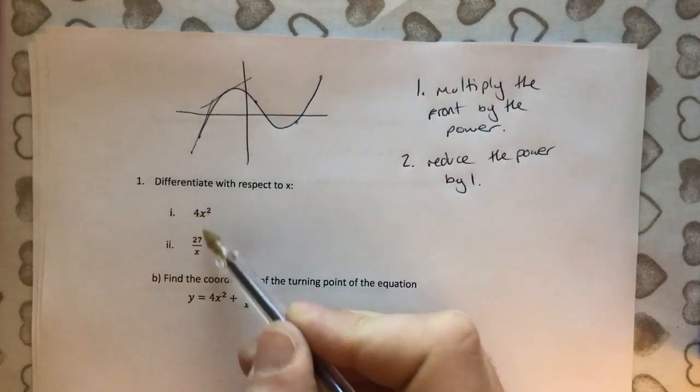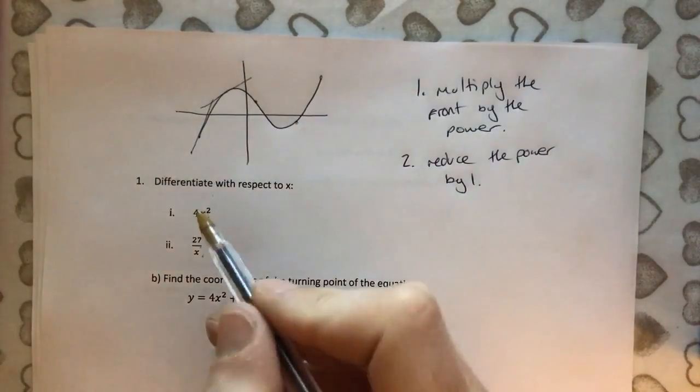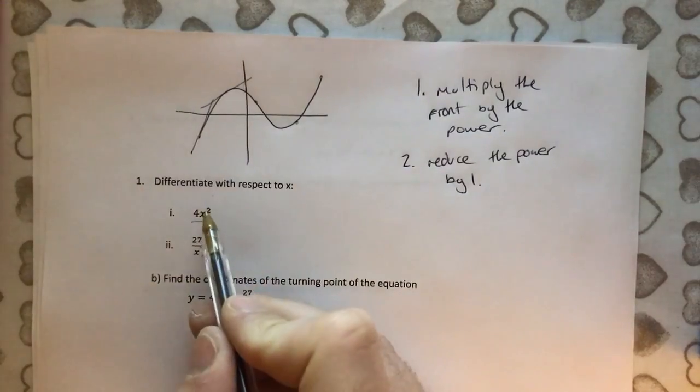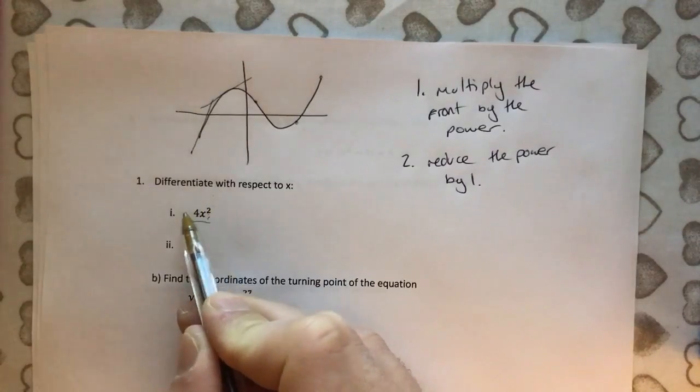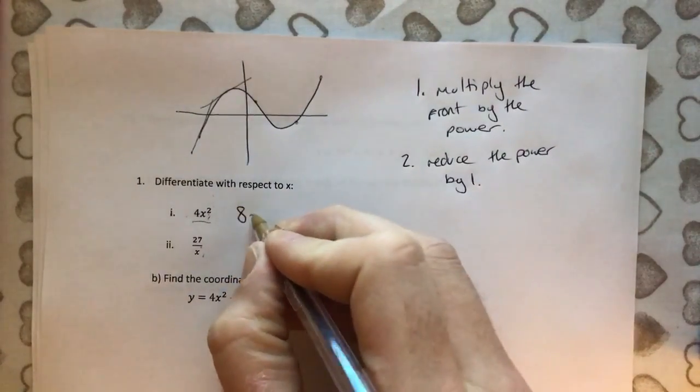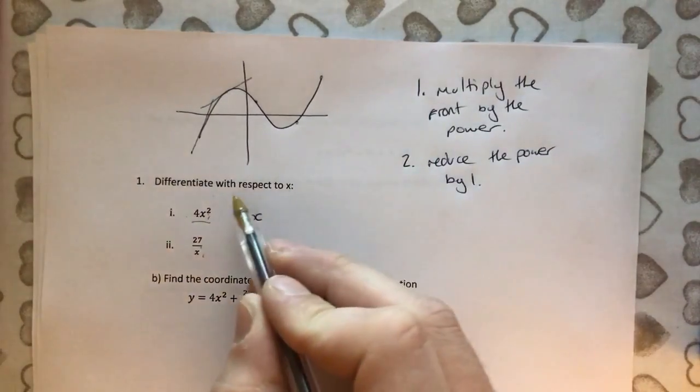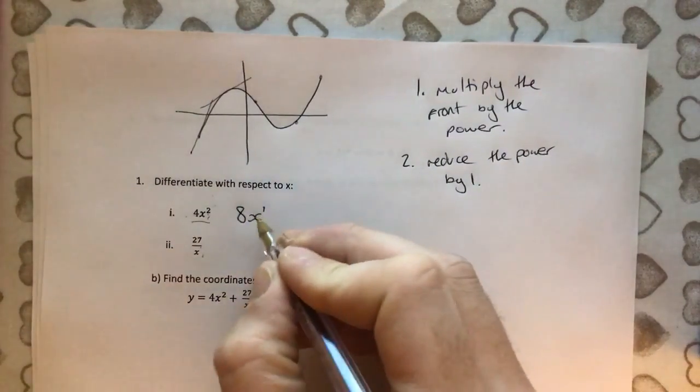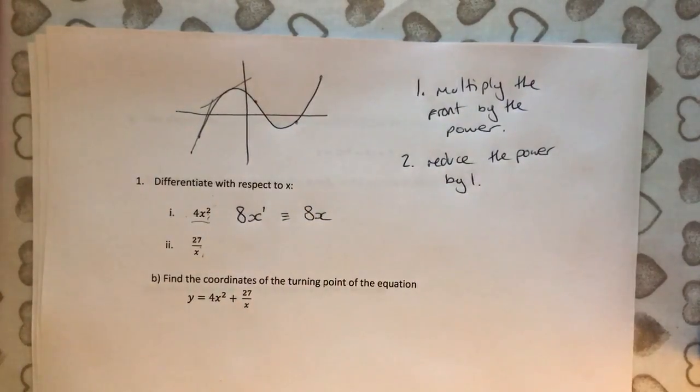It's been quite nice because it's separated the two parts of this equation and sort of scaffolded it for us. So we don't have to do it all in one go. So 4x squared. The first thing we do is we use the power and we multiply the front by the power. So the power is 2. 2 times 4 gives us an 8. And then we have our x. And the power now is reduced by 1. So x squared becomes x to the power of 1. But we don't need to write x to the power of 1. We would just write that as 8x because we don't generally write powers of 1.